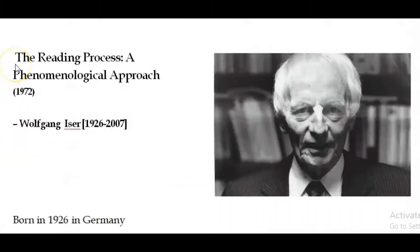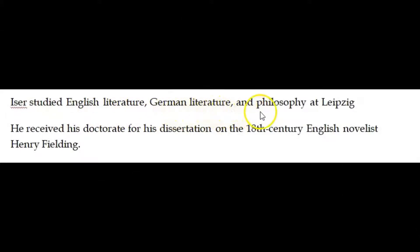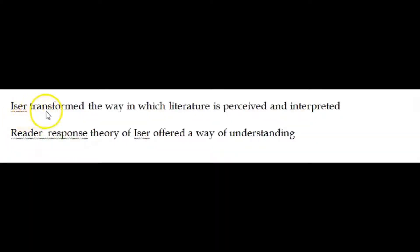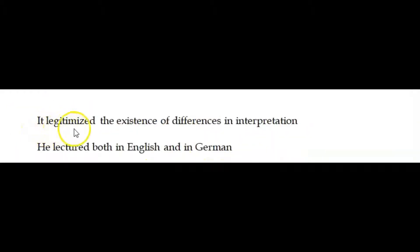Today's lecture is on the process of reading, one of the most famous essays written by Wolfgang Iser in 1972: 'The Reading Process.' Iser was born in 1926 in Germany; he studied English literature, German literature, and philosophy. He received his doctorate for his dissertation on the 18th century English novelist Henry Fielding. He taught us how to interpret and perceive ideologies in literature and transformed the way in which literature is perceived. Iser offered a way of understanding texts; his theory legitimized the existence of differences in interpretation — it is a paradigm shift for literary studies.